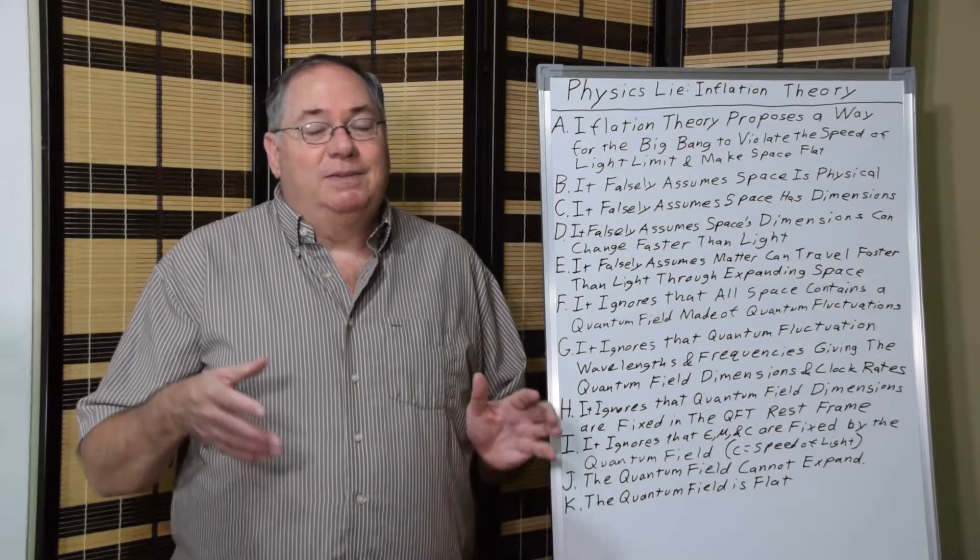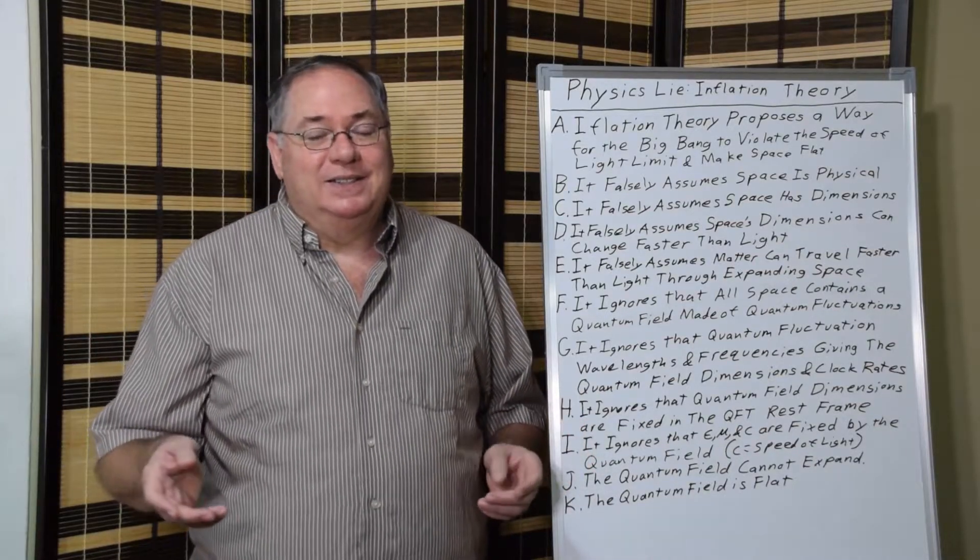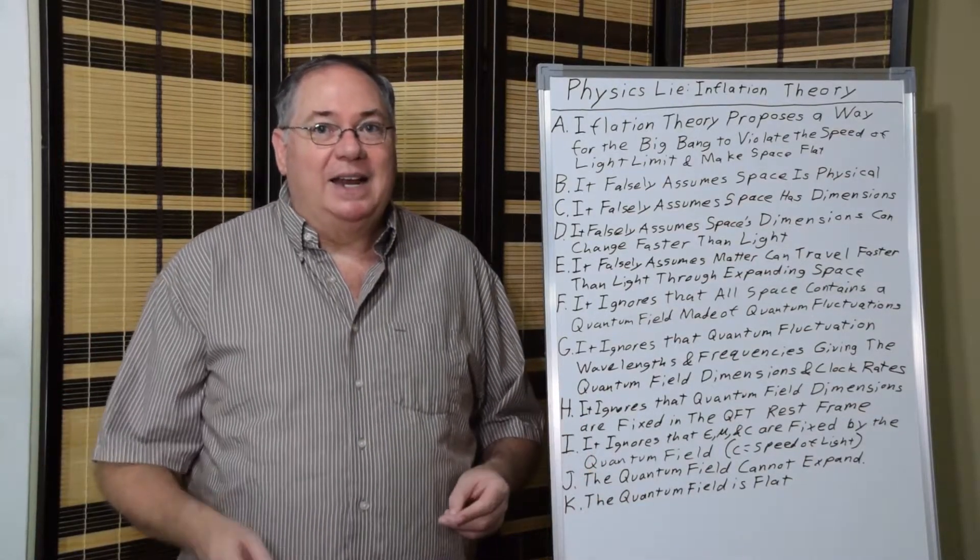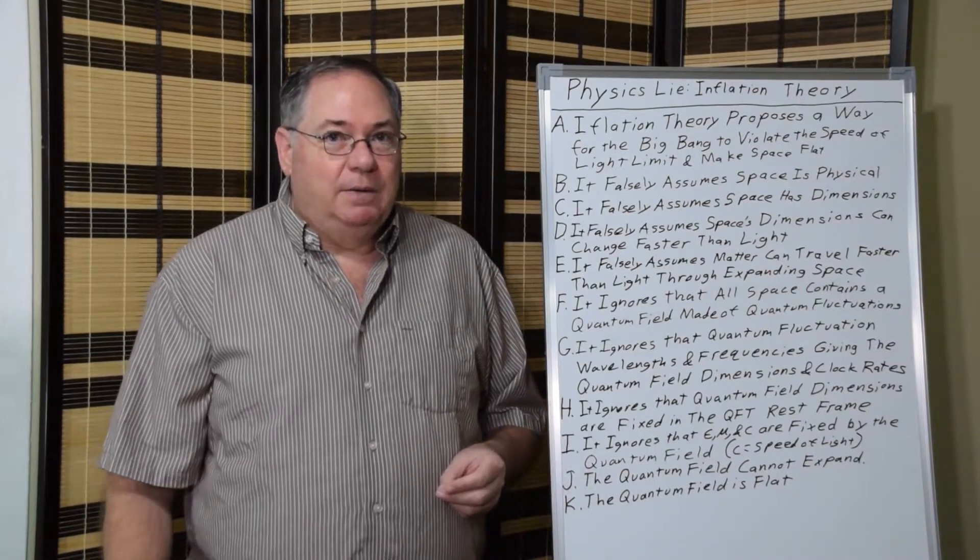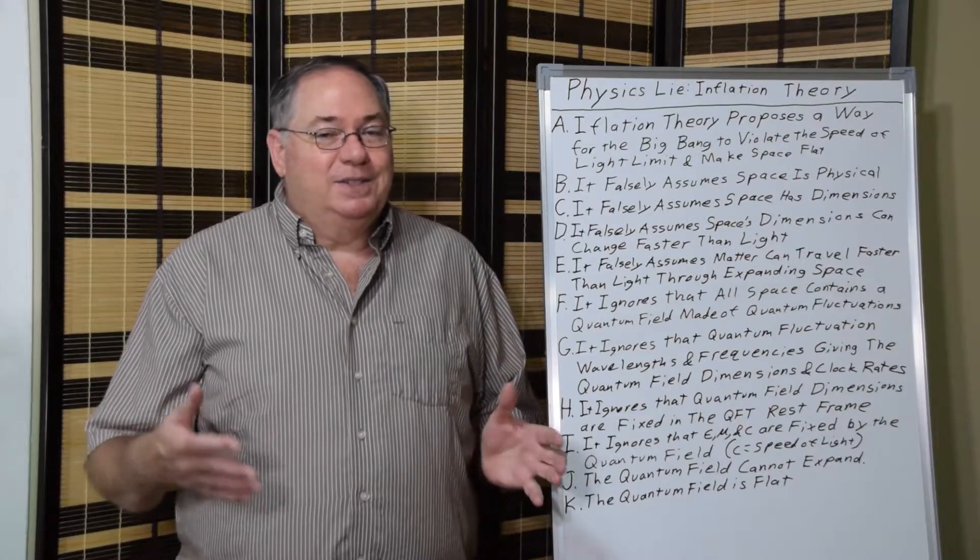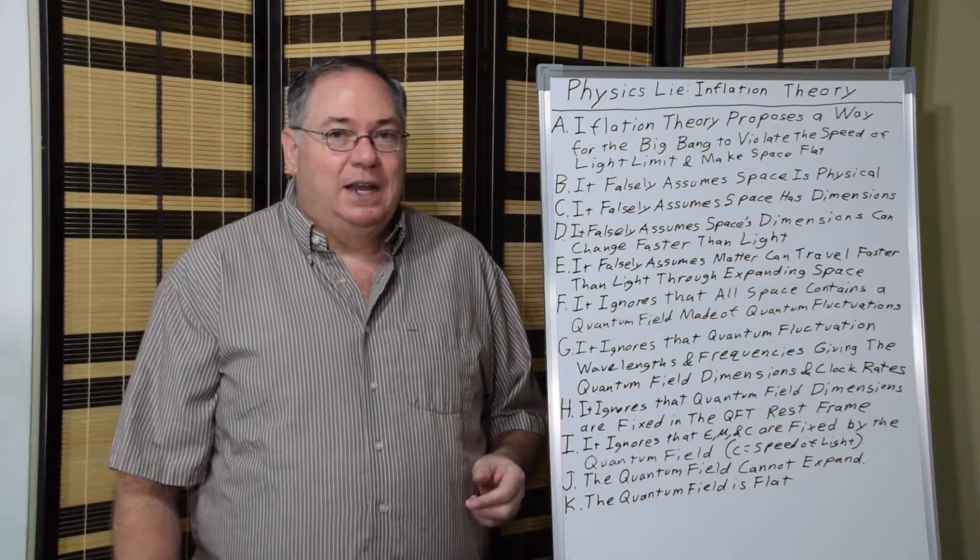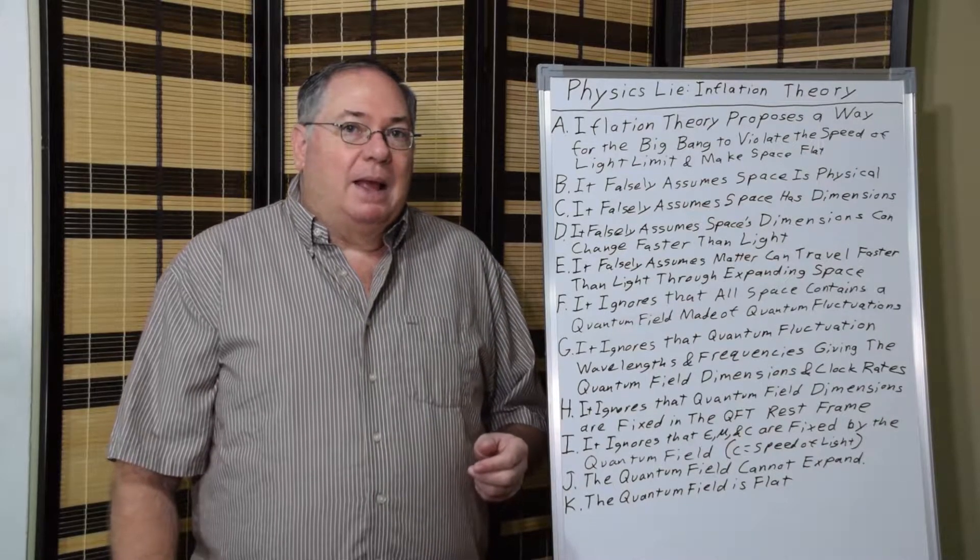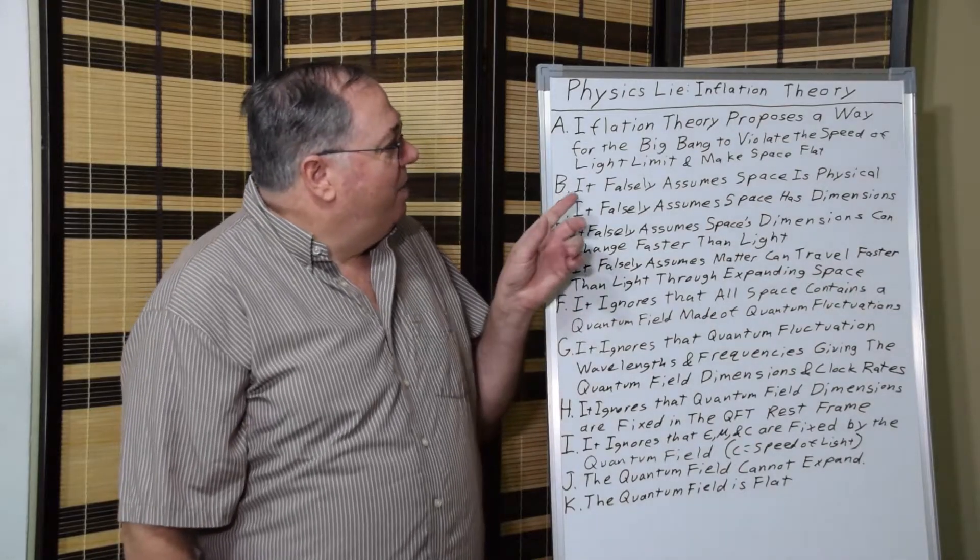Which is why based on that curvature instead of the universe being 13.8 billion light years old, it has to be 92 or 93 billion light years in size to explain the flatness if it starts at a point and if space curves, which already tells you there the space curvature is nonsense.